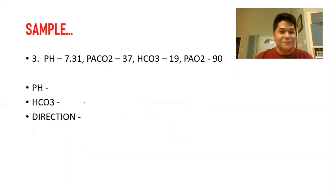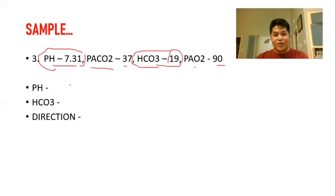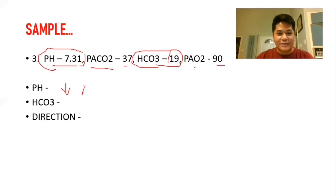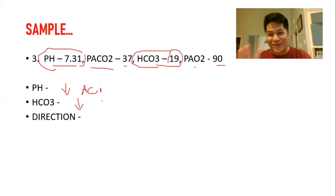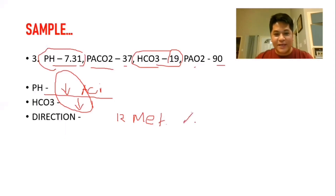Example three: pH is 7.31, PaCO2 is 37, bicarb is 19, and PaO2 is 90. The pH is 7.31 — that's a decrease from the normal 7.35 to 7.45, so it is acidosis. The bicarbs is 19 — also a decrease. Both are decreasing — same direction. According to ROME, same direction means metabolic. The pH dictates acidosis. Therefore, the answer is metabolic acidosis.